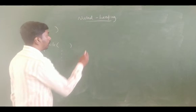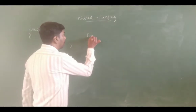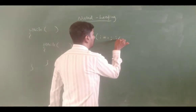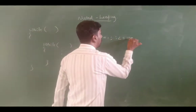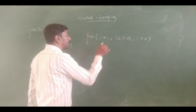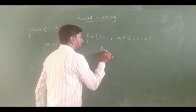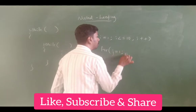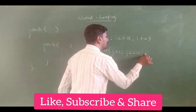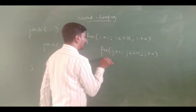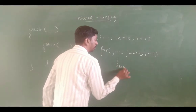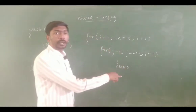We can also use the for loop. For example: for i is equal to 1, i is less than or equal to 10, i plus plus. Then for j is equal to 1, j is less than or equal to 10, j plus plus — and these are some statements. This inner loop is nested inside the outer loop.